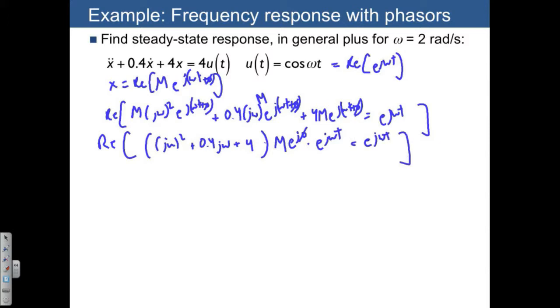And then what can we do with this? Well, notice that there's an e to the j omega t on both sides, so we can just reduce that. And we know that we have m e to the j phi is equal to 1, this is what the right-hand side is equal to, 1 angle 0.